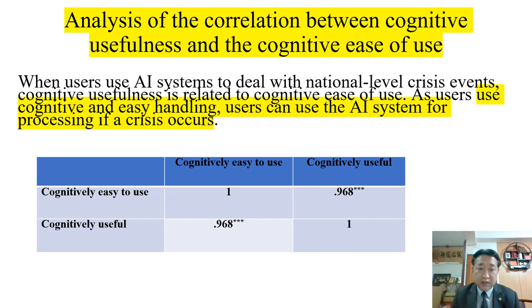Here is H4, addressing the usefulness of the system and ease of use. Users can use the AI systems to process information if a crisis occurs.